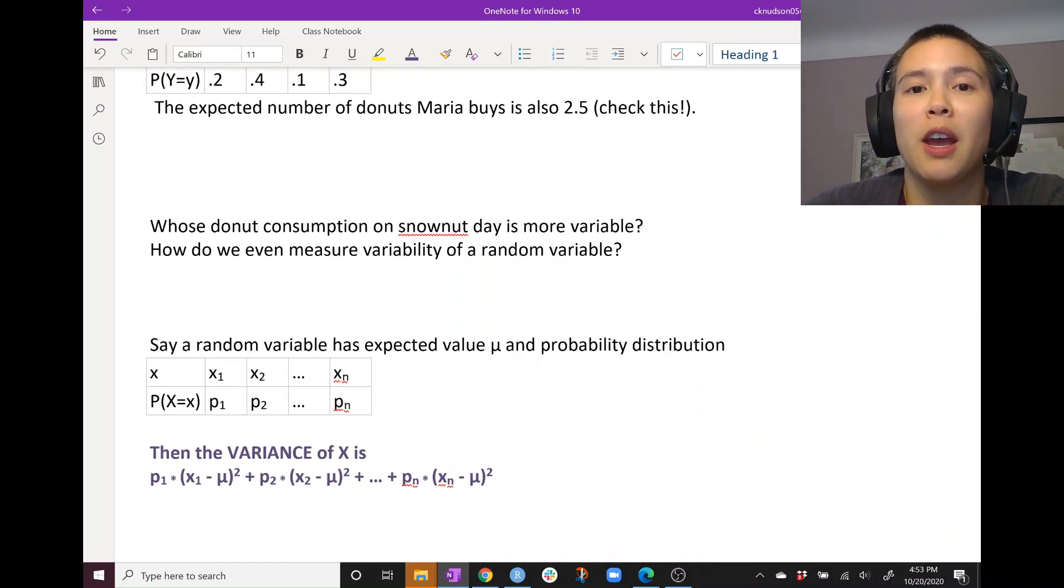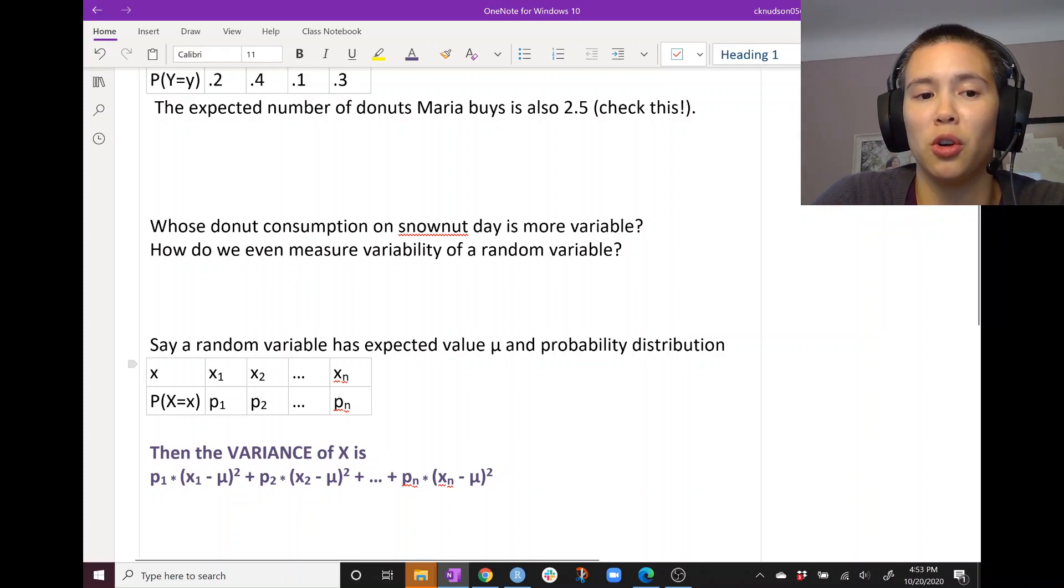Suppose that we have a random variable X that has expected value μ and X has the probability distribution shown here. It takes on values x₁ through xₙ with associated probabilities p₁ through pₙ. Then we can calculate the variance of X as p₁ times (x₁ - μ)² plus p₂ times (x₂ - μ)² and so on.